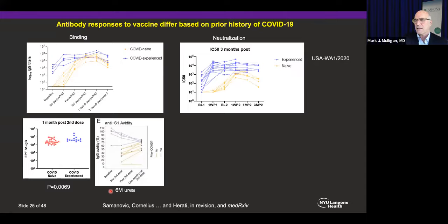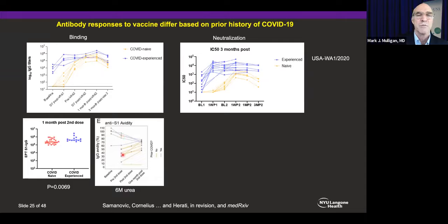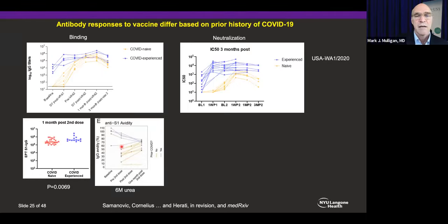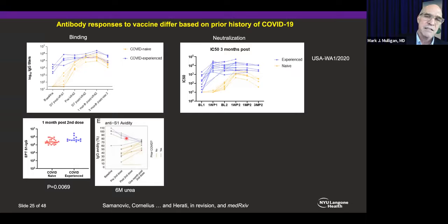This is an interesting experiment looking at avidity — the tightness of antibody binding to the S1 protein in ELISA format using 6-molar urea dissociation. After the first dose, people with prior COVID show much higher avidity than those without, but their avidity comes down — likely because the vaccine induces new epitopes, diluting out the more mature antibodies providing high avidity pre-vaccination. In contrast, COVID-naive individuals in yellow show no pre-vaccination antibody, and after first and second doses they continue to rise through germinal center reactions, somatic hypermutation, and continued antibody maturation.